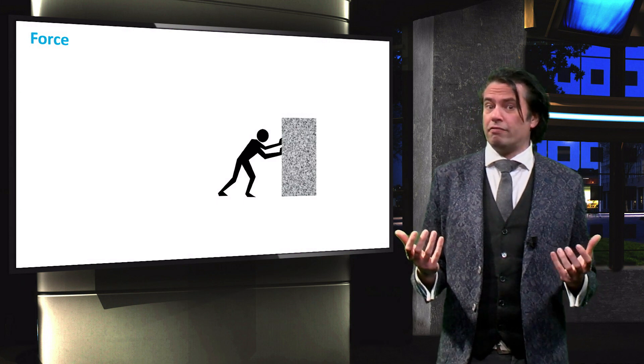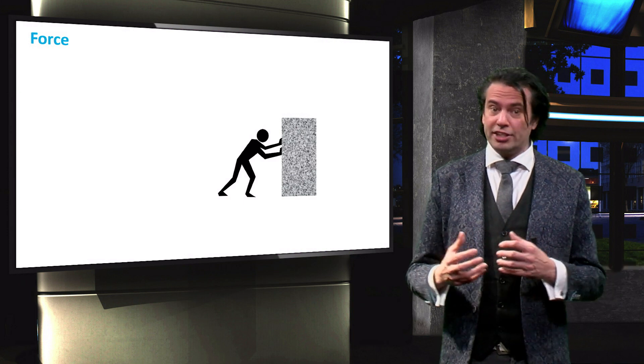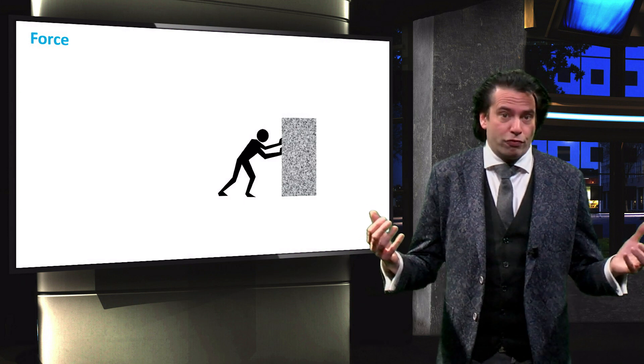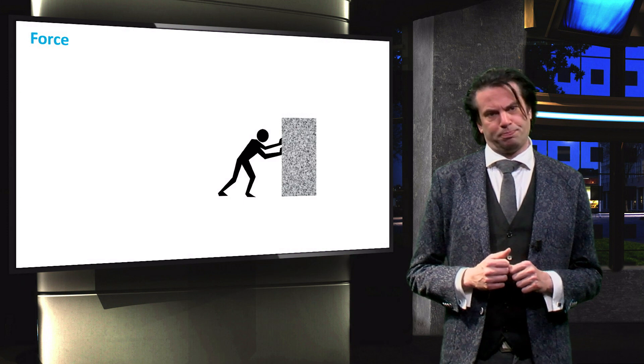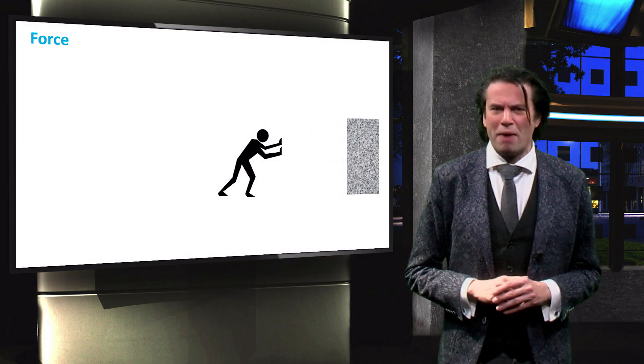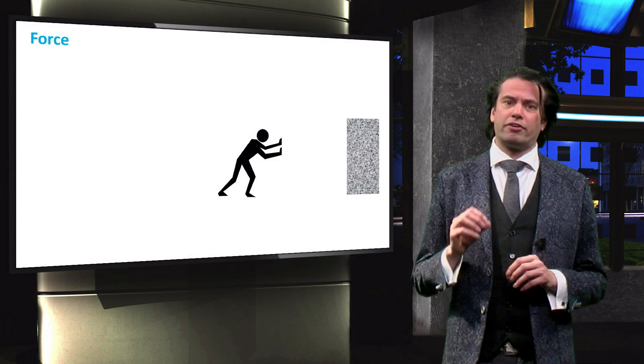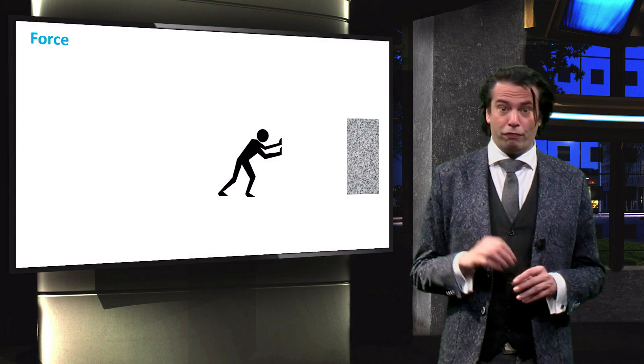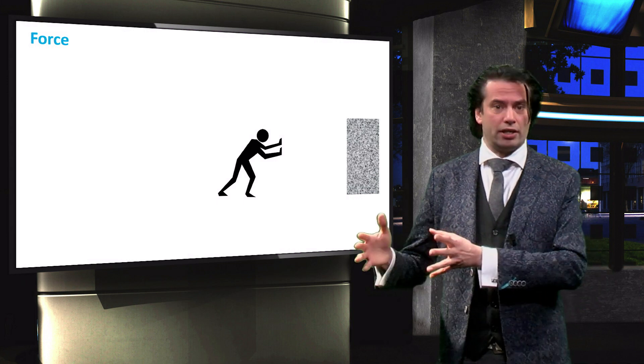The objects can be in physical contact or at a distance, like gravitational forces or magnetic forces. In this figure, a very strong man exerts a force on a granite block. The force causes the block to accelerate.